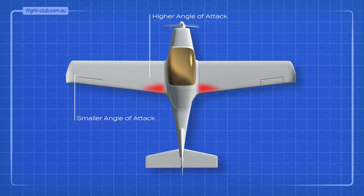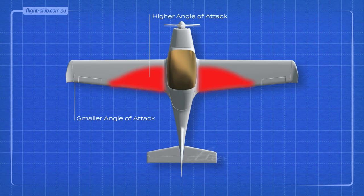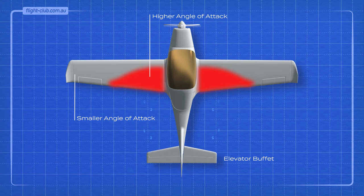Stalling at the wing root is preferable. The turbulent air that flows back over the elevator creates a buffet that the pilot feels on the controls. The buffeting acts as a warning sign of an impending stall.